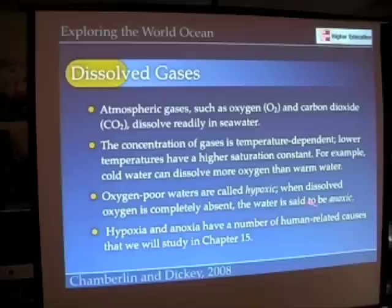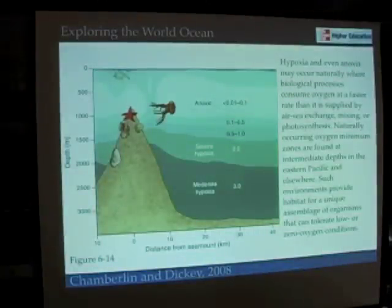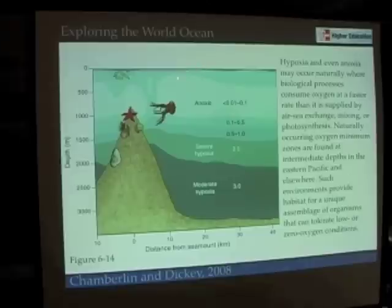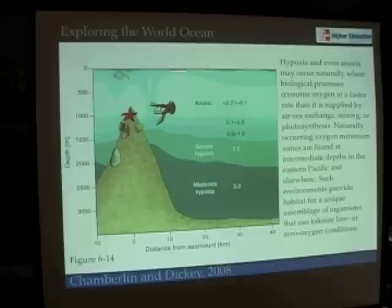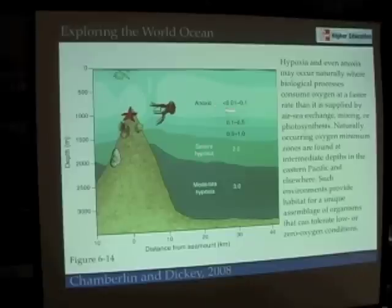Hypoxia and anoxia are two conditions we'll study in greater detail in chapter 15. Hypoxic and anoxic waters can occur naturally, and it happens largely at midwater depths where organic matter produced through photosynthesis at the surface sinks down. That organic matter is acted upon by bacteria — just like leaf litter and grass clippings are broken down by bacteria — and in breaking that organic matter down, oxygen is consumed. If the water is stratified and not mixing, oxygen can't be replenished to these midwater depths, so oxygen concentrations go low or completely to zero — anoxic conditions.